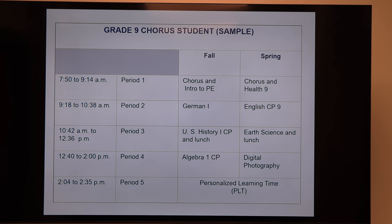Student schedules are slightly different if you're in the music program. Here's an example of a grade nine chorus student. Block one will always be chorus or band. In the fall, this student has Intro to PE — so it's chorus one day, Intro to PE the other day. In the spring they continue chorus, which is year-round, and that's when they have Health 9. They have German as their world language and their social studies, math, English, and science, plus digital photography as their other elective.